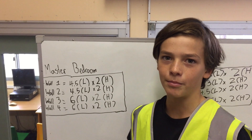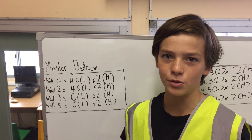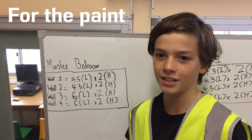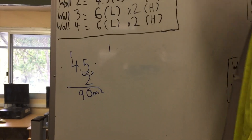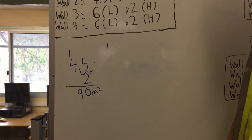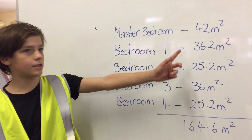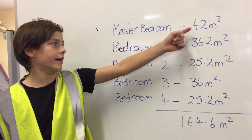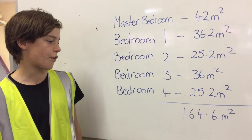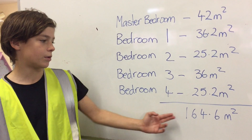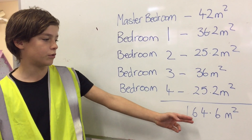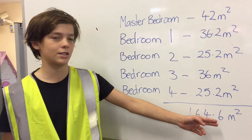So to find the area of the master bedroom walls, we need to multiply the length times the height on all four walls. So the answer is nine metres squared. We apply the same principle to all of the walls. So now we need to work out the total surface area of all the walls. The area of the master bedroom is 42 metres squared. If we add these up, the total surface area of all the walls is 164.6 metres squared.